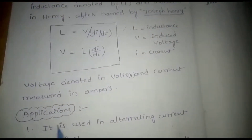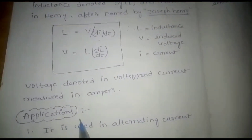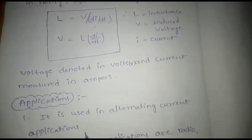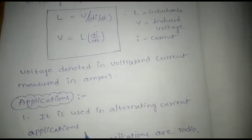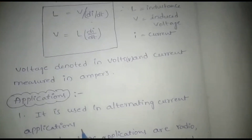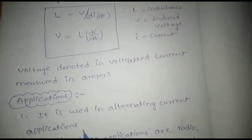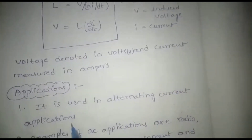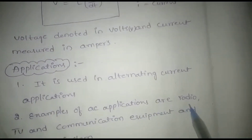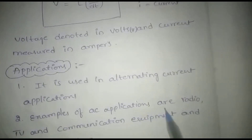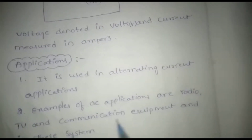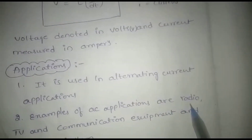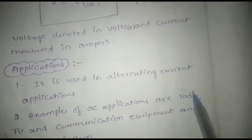Now we are discussing about the applications. The first application is in alternating current systems. Examples of AC applications are radio, TV, and communication equipment such as FM radios.